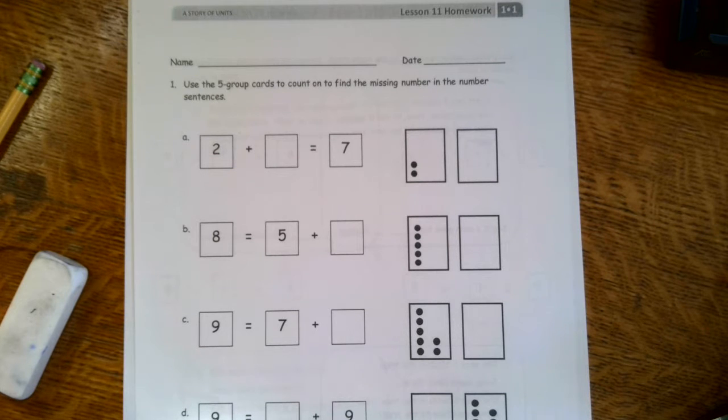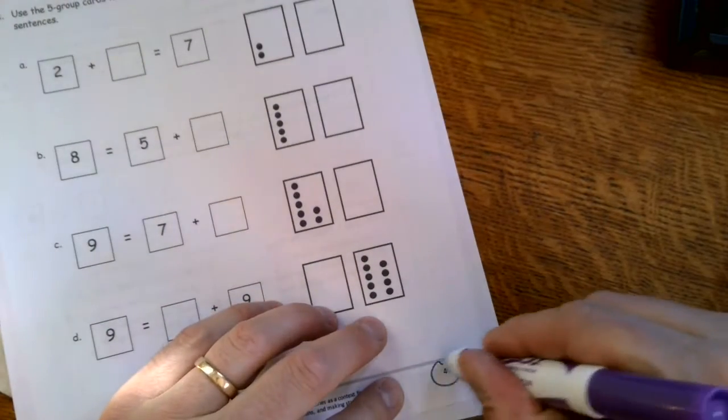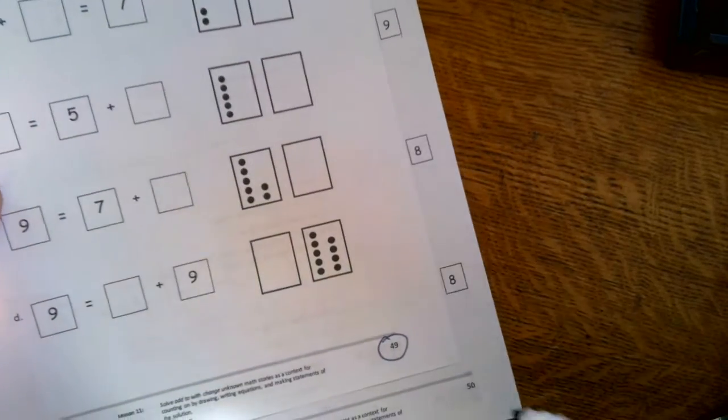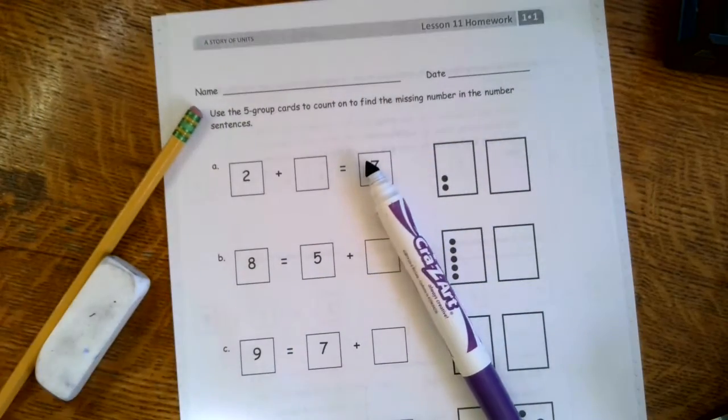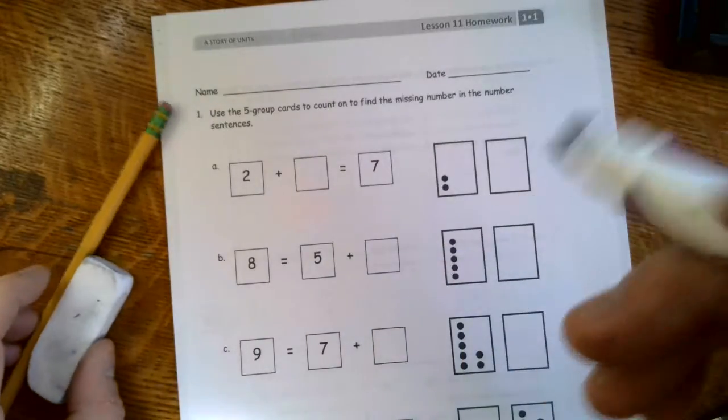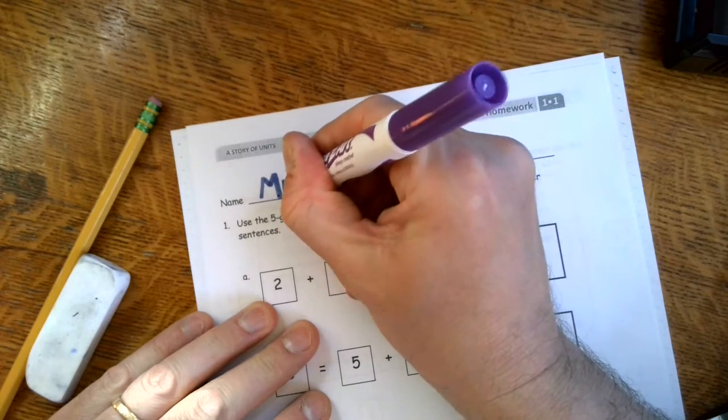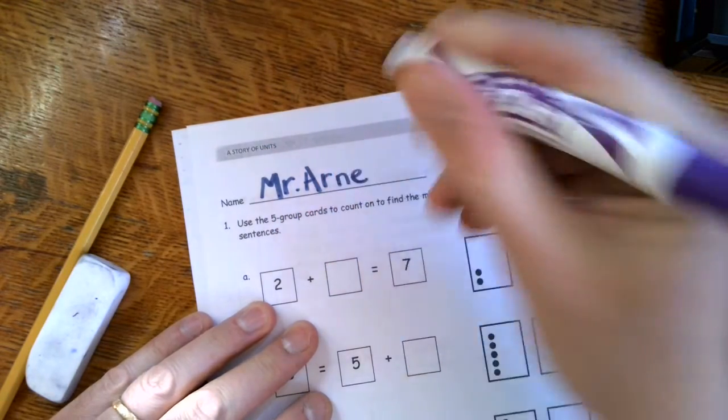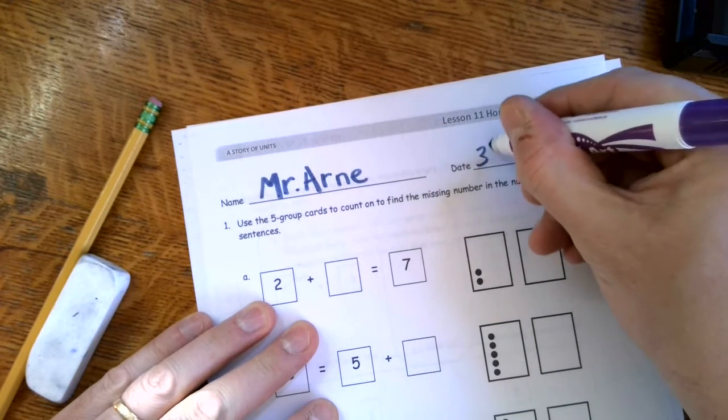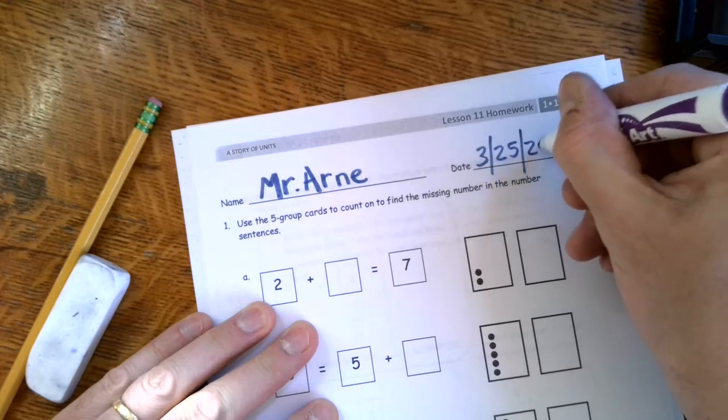Hi everyone. Mr. Arna here doing some Eureka math with you. Pages 49 and 50. Alright, I'm doing it in a marker. You guys are hopefully doing it with pencil and an eraser. Let's start by writing my name up here. Mr. Arna, which is purple today. Today is going to be the year 2021.